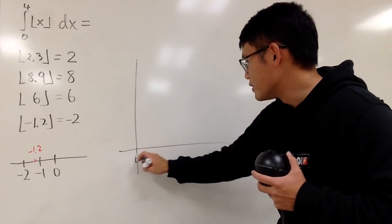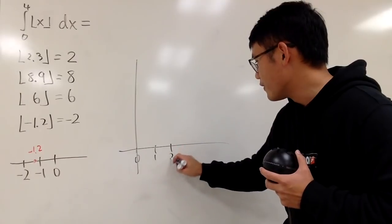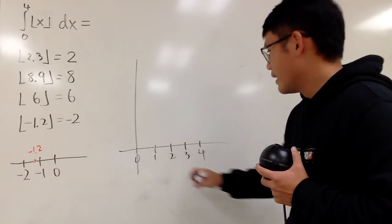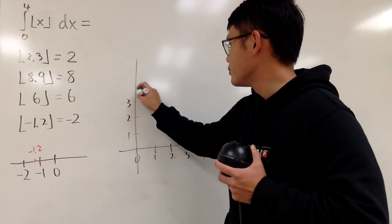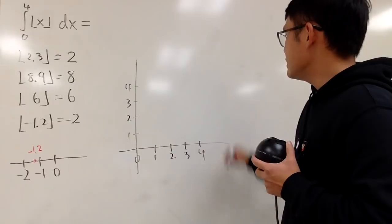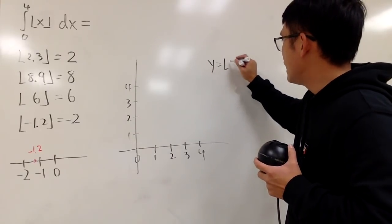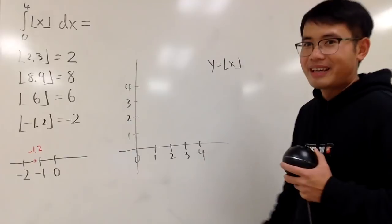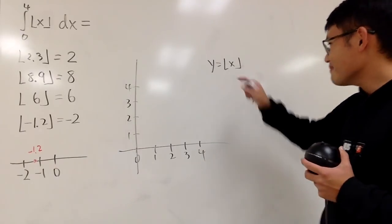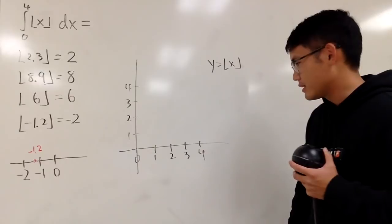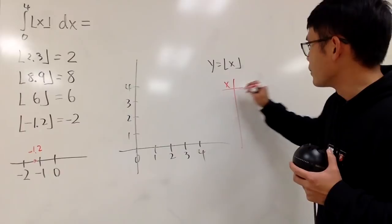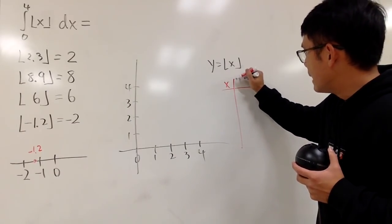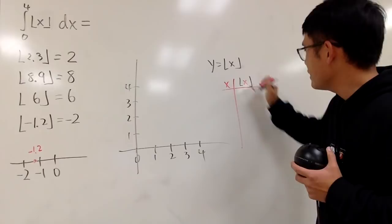Well, I need to go from 0 to 4, so let me just label this right here. And I will just also label the y values, 1, 2, 3, 4. And, yeah, let's graph y equals floor of x. It kind of looks like absolute value, but it's not. So what you can do real quick is put down some x values and also some floor of x values, real quick.